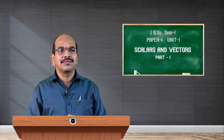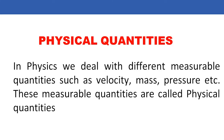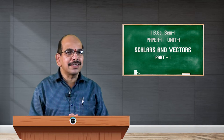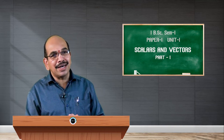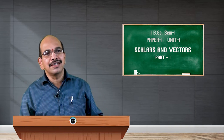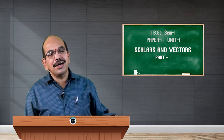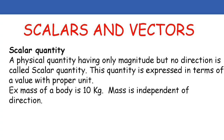Now let us look at them one by one. Normally, a physical quantity is a quantity which is measurable. In physics we deal with different types of quantities such as velocity, mass, pressure, momentum, etc. All these quantities can be measured, so they are known as physical quantities. If we talk about physical quantities, we come across two types: they are classified as scalars and vectors.